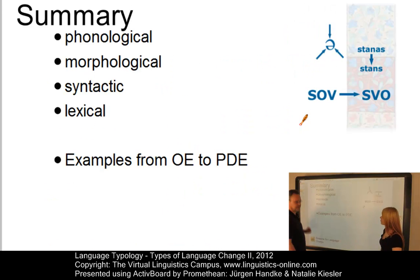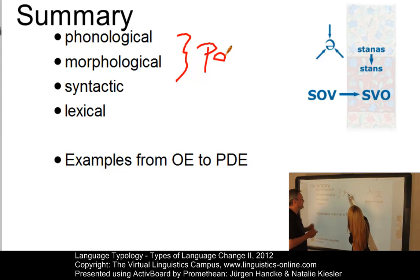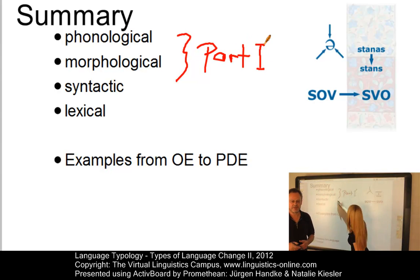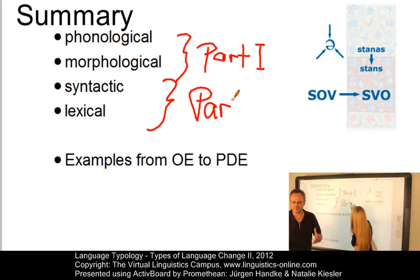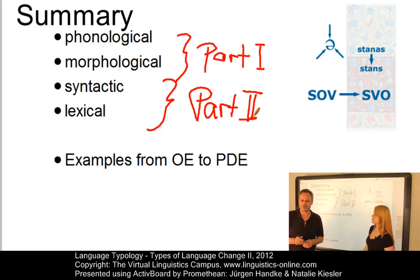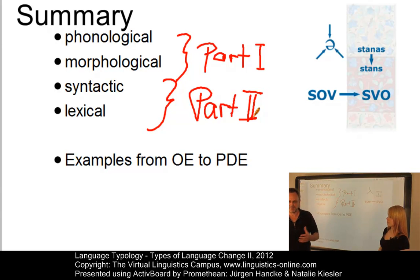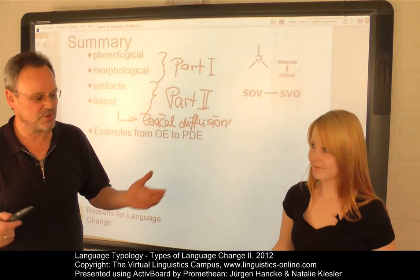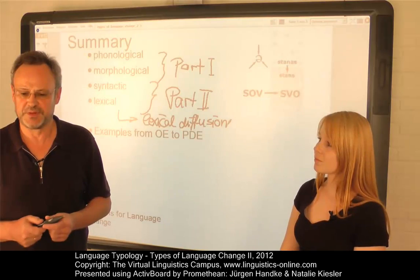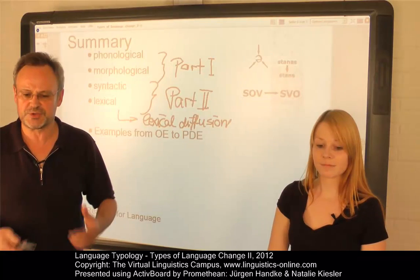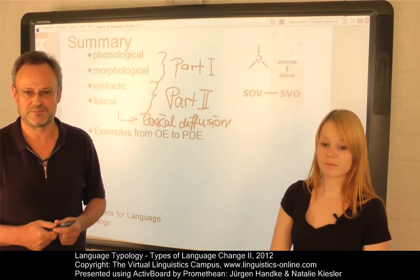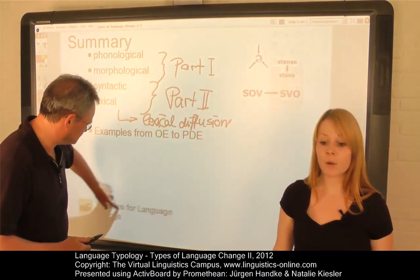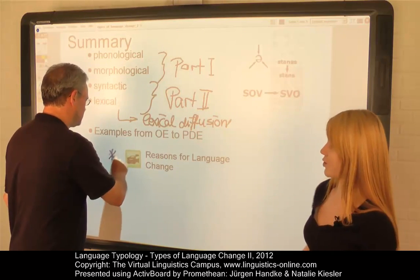Having defined the central principles of language change — phonology and morphology in the first part of this two-part e-lecture, and syntactic and lexical change in this e-lecture — a central question is: why do languages change? Linguistic change does not operate in an across-the-board fashion; some speakers introduce the change before others, and it gradually spreads through a language. With regard to lexical change this is called lexical diffusion: first only a few people use the change sporadically in a few words in their local variety, then a large number of words and constructions are affected, and eventually the entire language. To see how these and other reasons for language change interact, we recommend you to view our e-lecture on Reasons for Language Change.